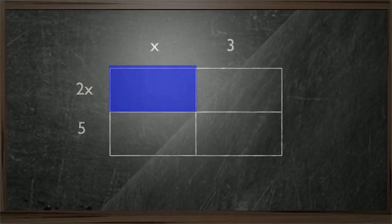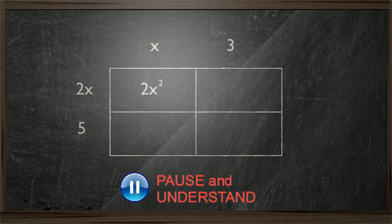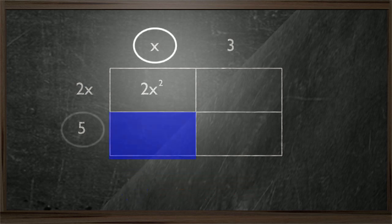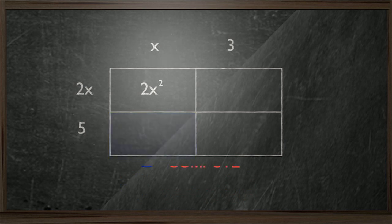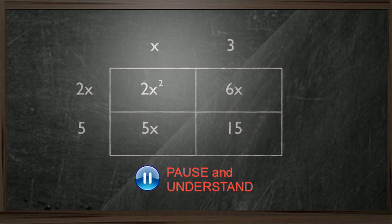So this first rectangle has width x by height 2x, so its area will be 2x squared. This next rectangle, x by 5, will have area 5x. This next rectangle, 3 by 2x for an area of 6x. And this last rectangle, 3 by 5 for an area of 15. So remember, the area of the rectangle is equal to the product. So we can add up the individual areas to get our product.